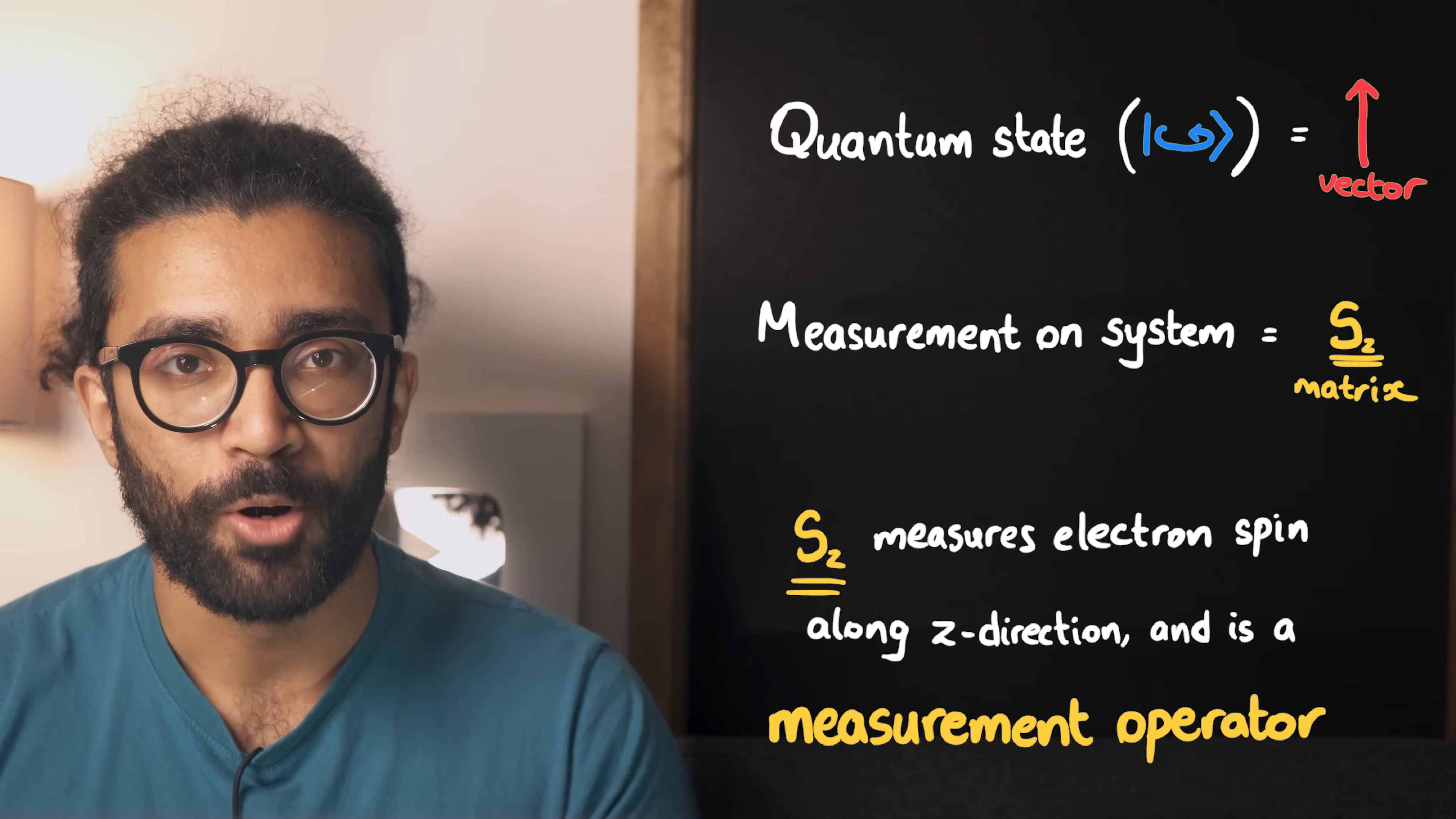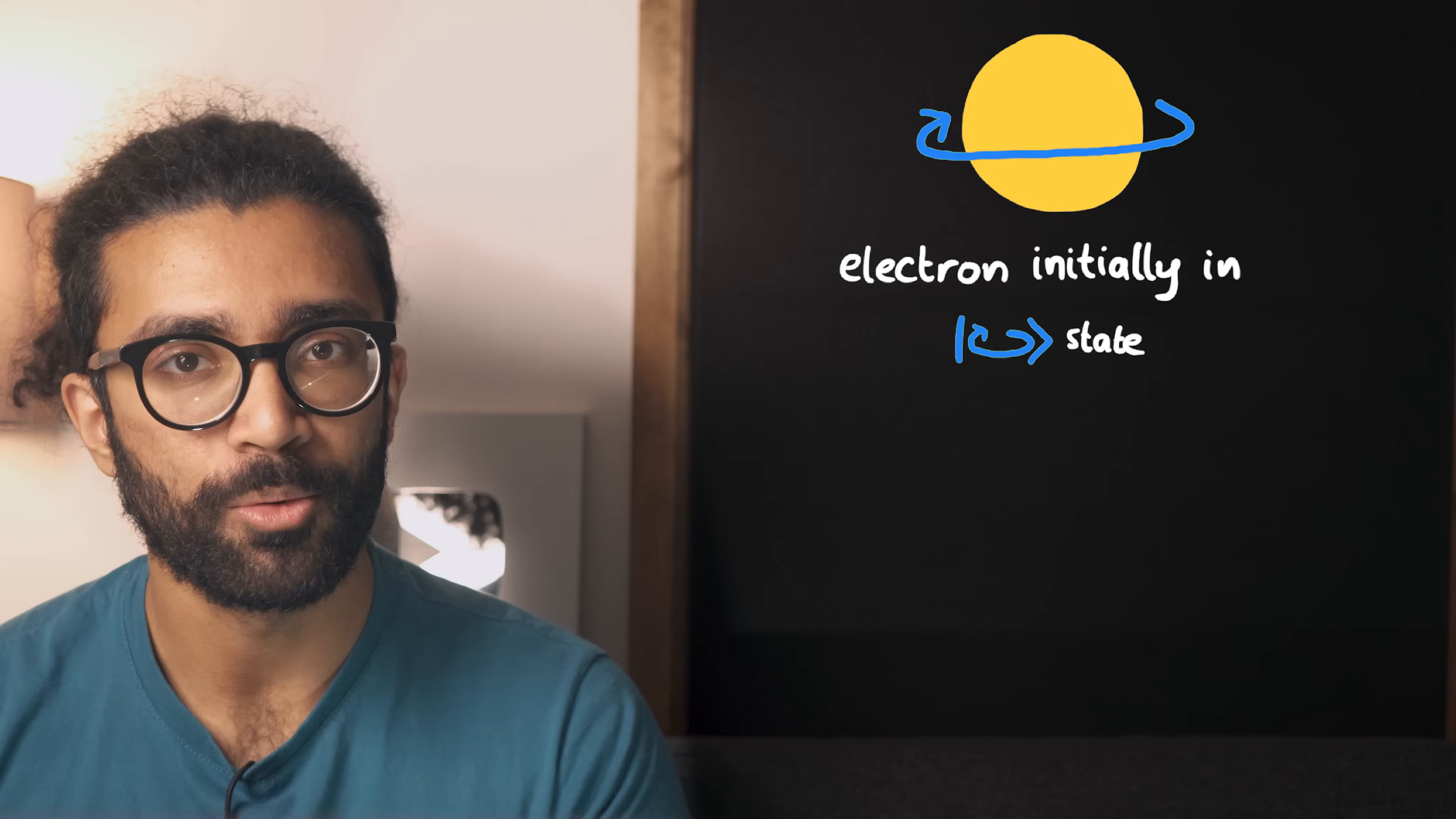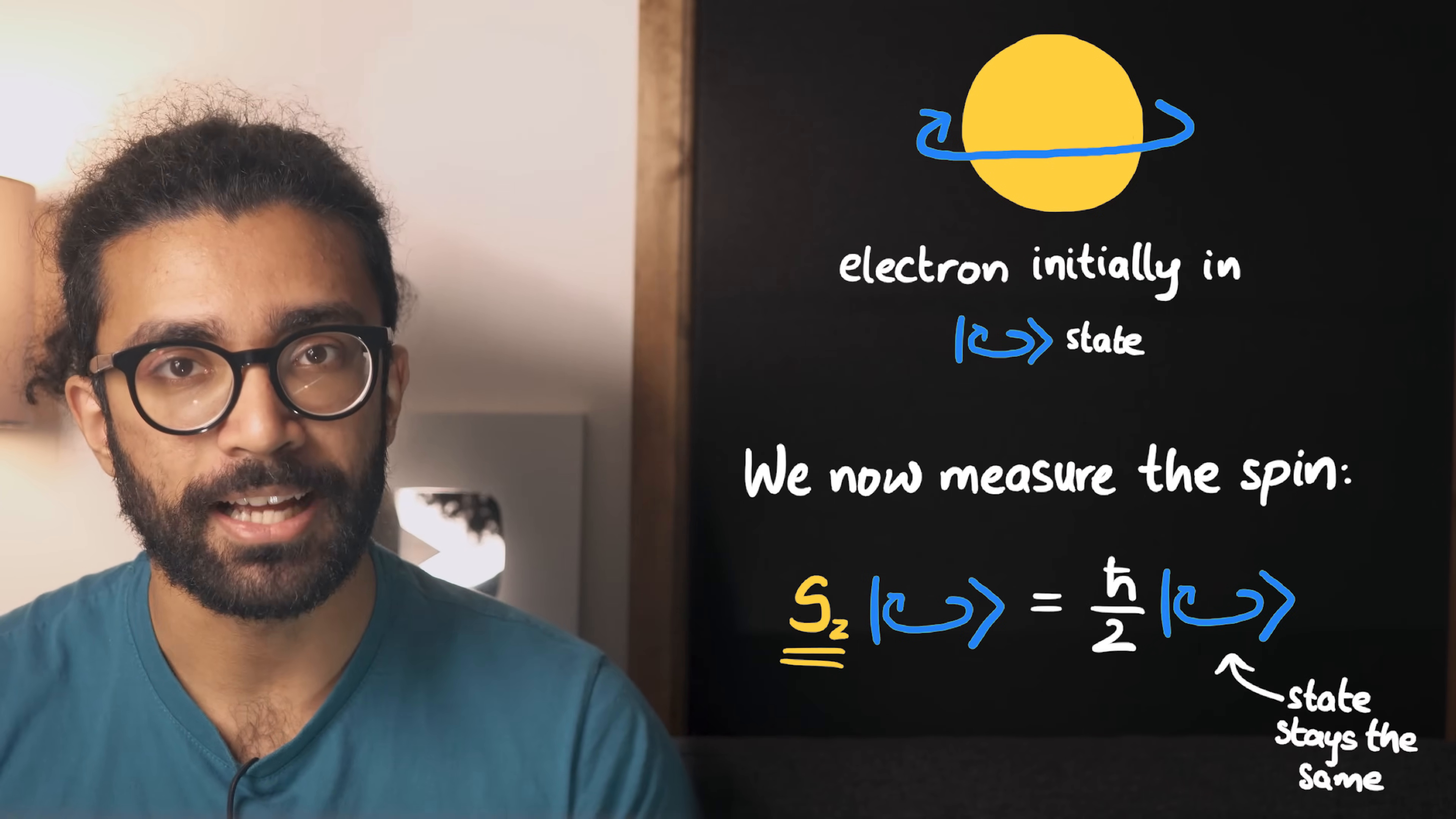Now, some states are eigenstates of our measurement operator. For example, let's say before we make our spin measurement, the electron happens to be in the spinning clockwise state. If we then make a spin measurement on this electron, the state of the electron stays the same. Making a measurement does not affect our system.